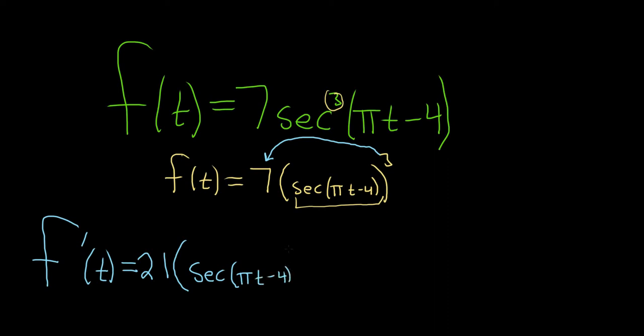This is the chain rule. It's the derivative of the outside, leave the inside untouched. We subtract 1, so 3 minus 1 is 2.